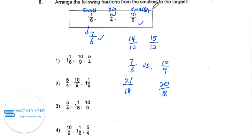We arrange the fractions from the smallest. So this is the smallest. This is the middle. This is the largest. So it is option 4.